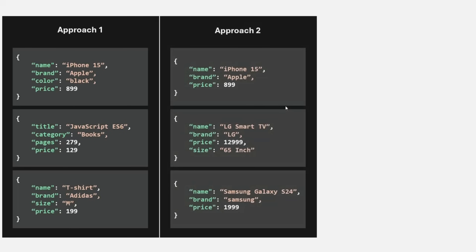Then there is a second approach where some fields are present in all documents, but some documents might have extra fields not present in others. For example, name, brand, and price are present in all documents in the collection, but a second document might also have an extra size field. Some products might need a size field, but all products will have name, brand, and price. We can define a schema where those are core required fields, while size is optional. In this approach we define core fields present in every document, but the general schema is the same.